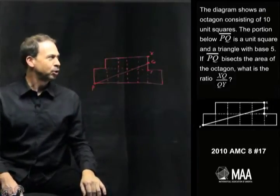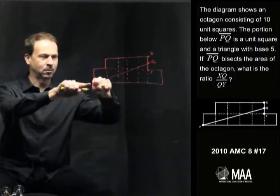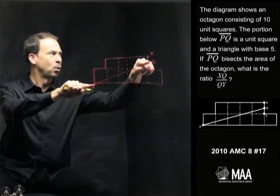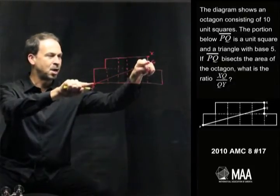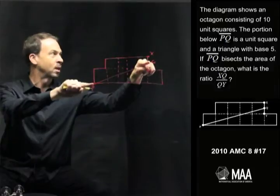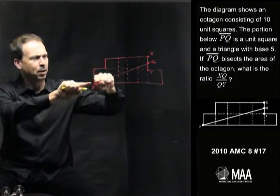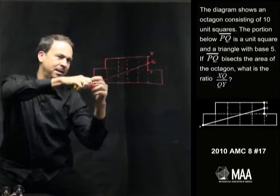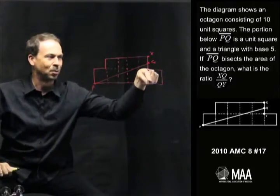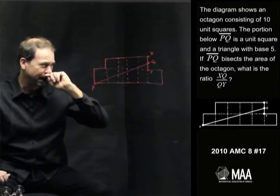Now, the portion of the figure below the line PQ, so here's the line PQ. The portion of the figure apparently is a triangle of base 5 and another unit square, if I read the question correctly. Now, I'm a little bit confused, actually. What I mean by below the line PQ, it looks like it's just the part literally below PQ. It's ignoring that part. Well, is that what the question means?